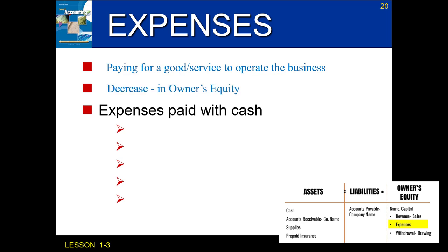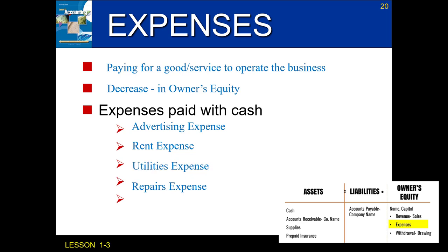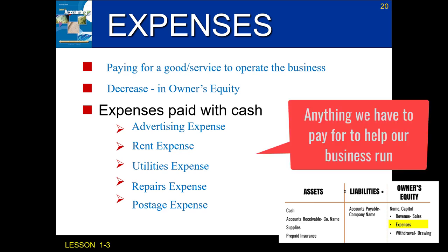The opposite of revenue is expenses — when our business has to pay for something to help it operate. This causes a decrease in owner's equity. There are many different expenses a business might have: advertising expense, rent expense, utilities expense, repairs expense, postage expense, charity, and so on. Anything we have to pay for to help our business run is considered an expense. These account titles are straightforward — the transaction will say 'blank expense,' and that's the actual account title.